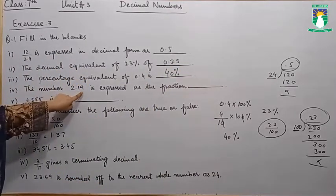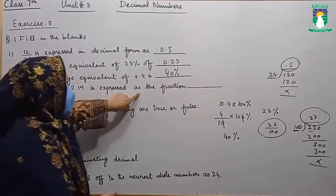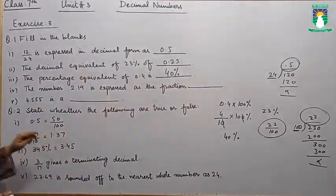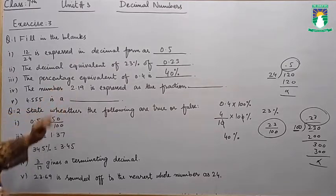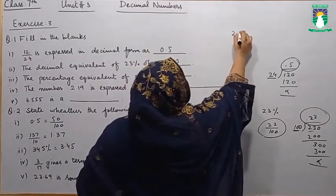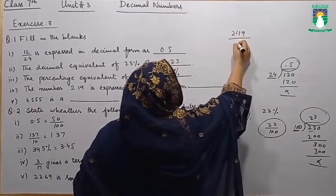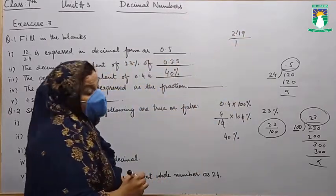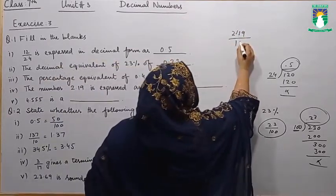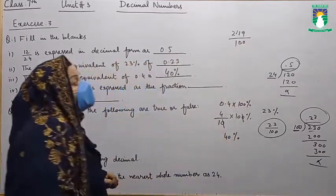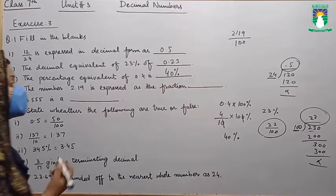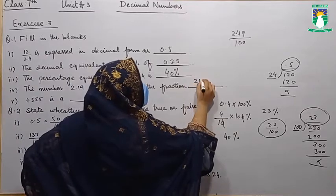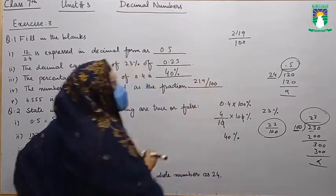Now students, the number 2.19 is to be expressed as a fraction. How can we write 2.19 in fraction form? Remove the decimal point, and in the denominator put 1 followed by as many zeros as there are digits after the decimal point. So we have 219 over 100. The answer is 2.19 over 100, which equals 219/100.